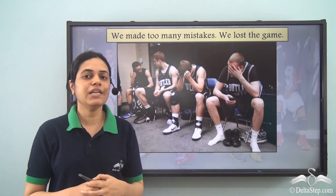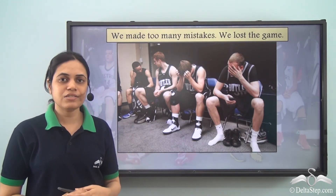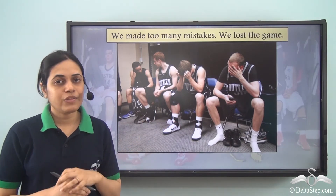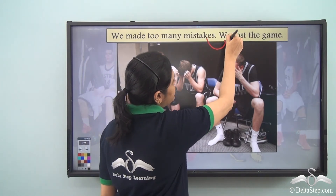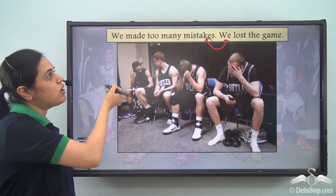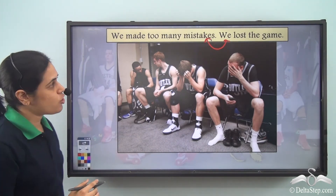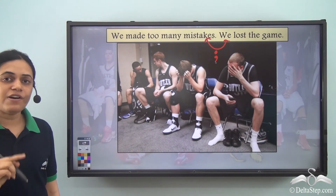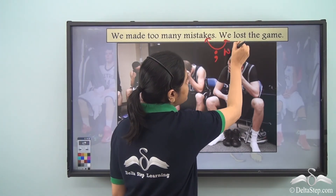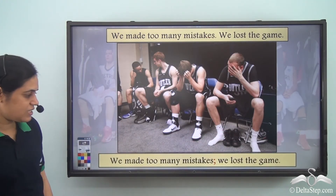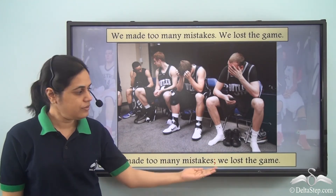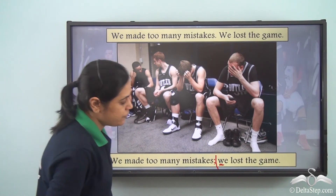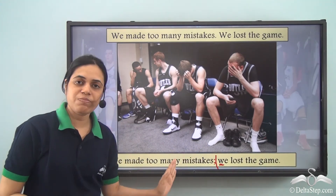Consider: 'We made too many mistakes. We lost the game.' Can you write these sentences using a semicolon? These two sentences are linked — we lost the game because we made too many mistakes. So I can join them using a semicolon. Remember, once we join them, 'we' will start with a small 'w'. The sentence becomes: 'We made too many mistakes; we lost the game.' The 'w' is small, and after the semicolon there is a space but no space before it.